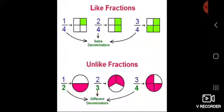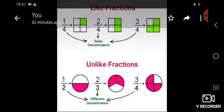Next is unlike fraction — fractions having a different denominator. What happens is the denominator is different: 1 upon 2, 2 upon 3, 3 upon 4 — here the three denominators are different. Clear?